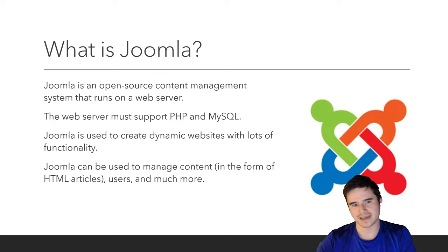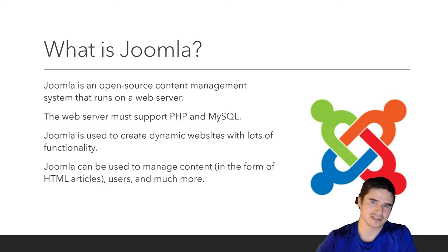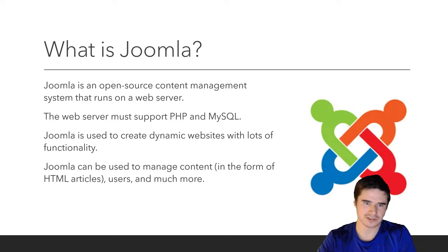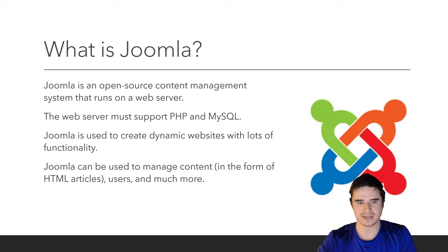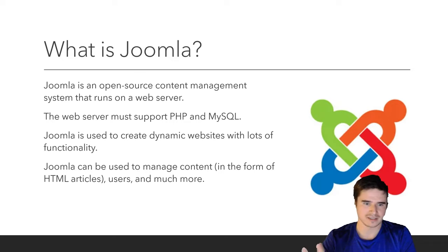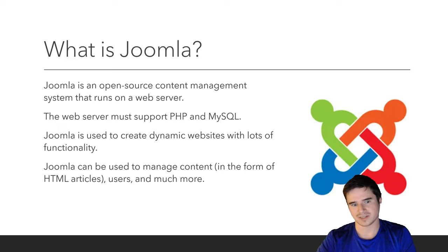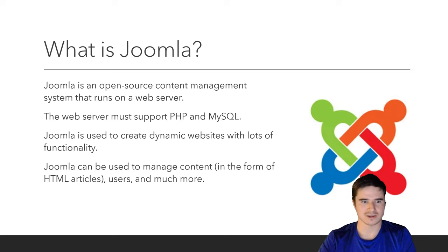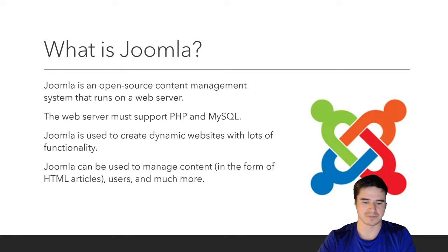Joomla is used to create dynamic websites with lots of functionality — users can log in and do things on our website, we can have content built by multiple users, and the site can update and change as needed. It's pretty powerful compared to a static website that is fixed and doesn't change. Joomla can also be used to manage content in the form of HTML articles — hence the reason it's called a content management system — but it also manages users and much more.